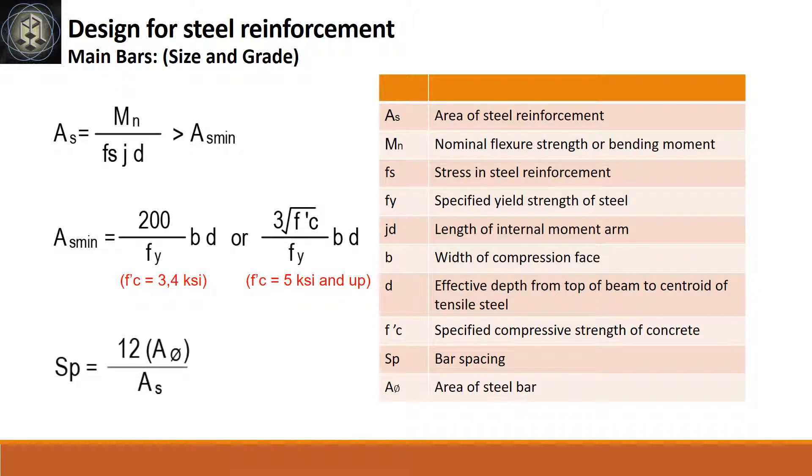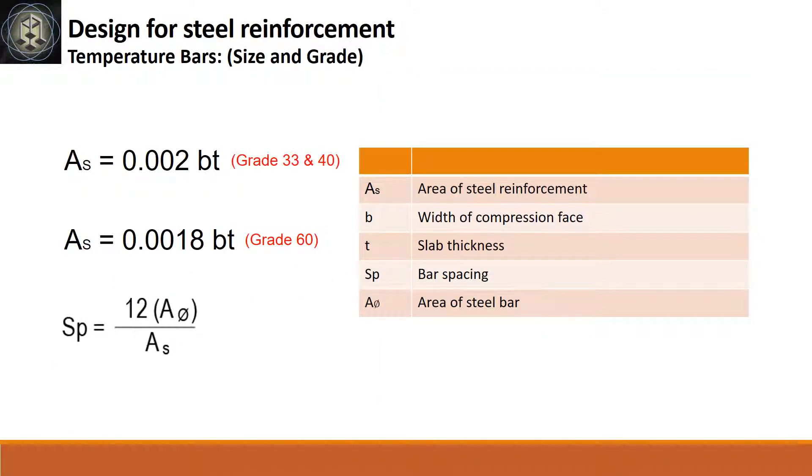After we solve for bending moment and slab thickness, get the area of steel required for main bars and its equivalent bar spacing. Continue solving the area of steel required for the temperature bars.